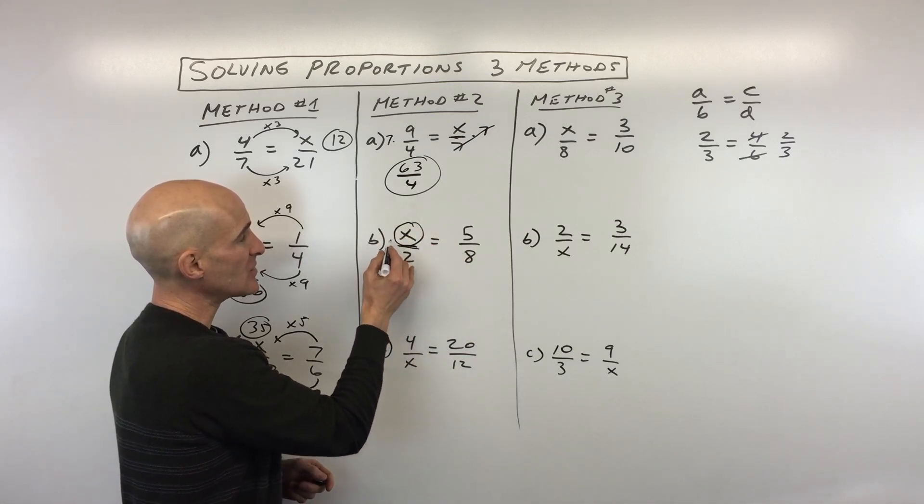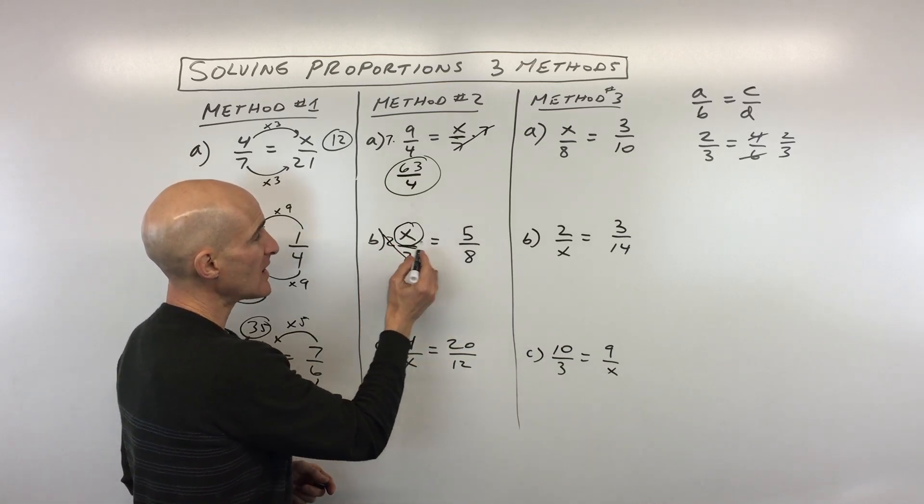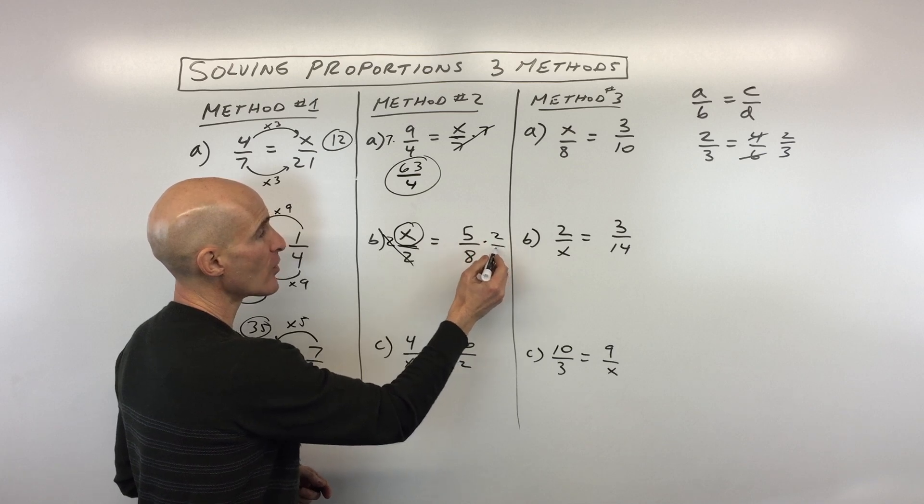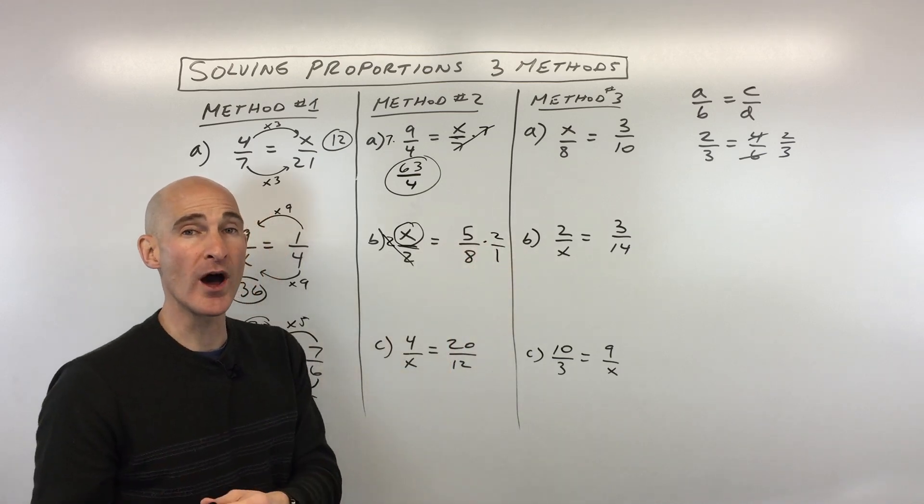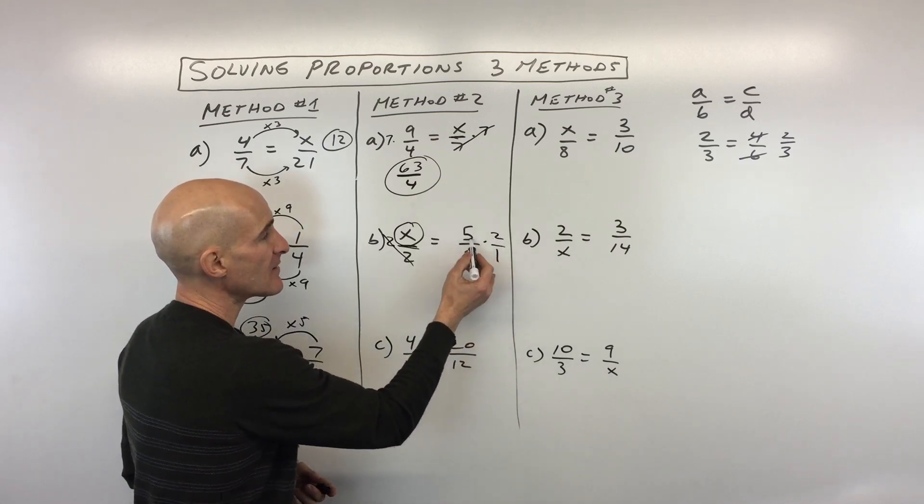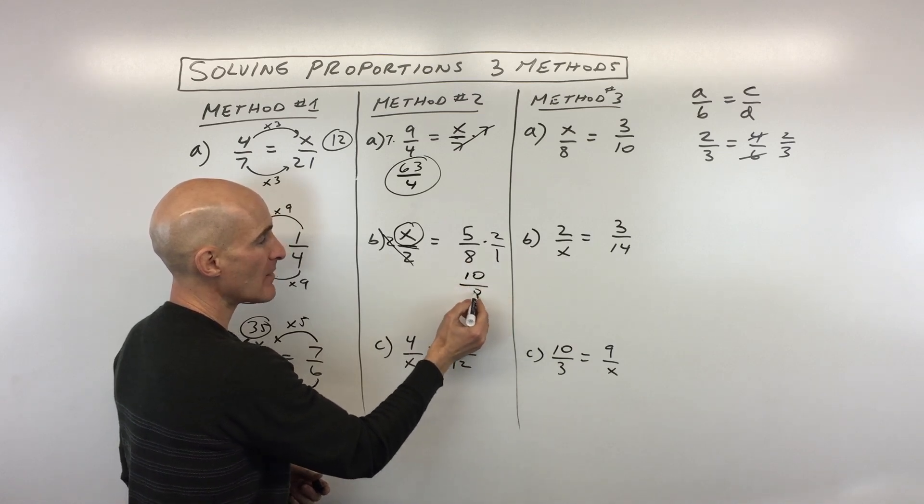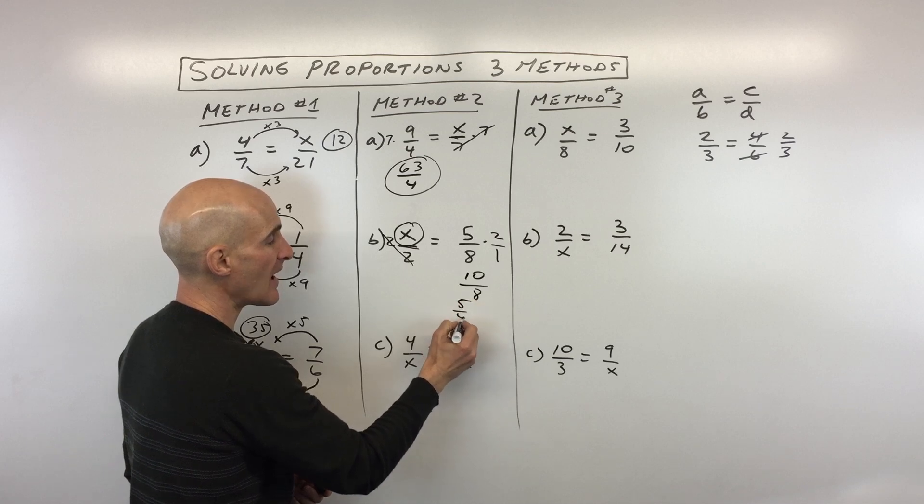So the opposite of dividing by 2 is to multiply by 2, that way, those are going to cancel. If we do that to the left, we have to do it to the right. Now, 2 is the same as 2 over 1, you can always write a whole number as a fraction by putting it over 1. So you can see we're getting 5 times 2 is 10, 8 times 1 is 8. And we can reduce 10 over 8 by dividing the top and bottom by 2.